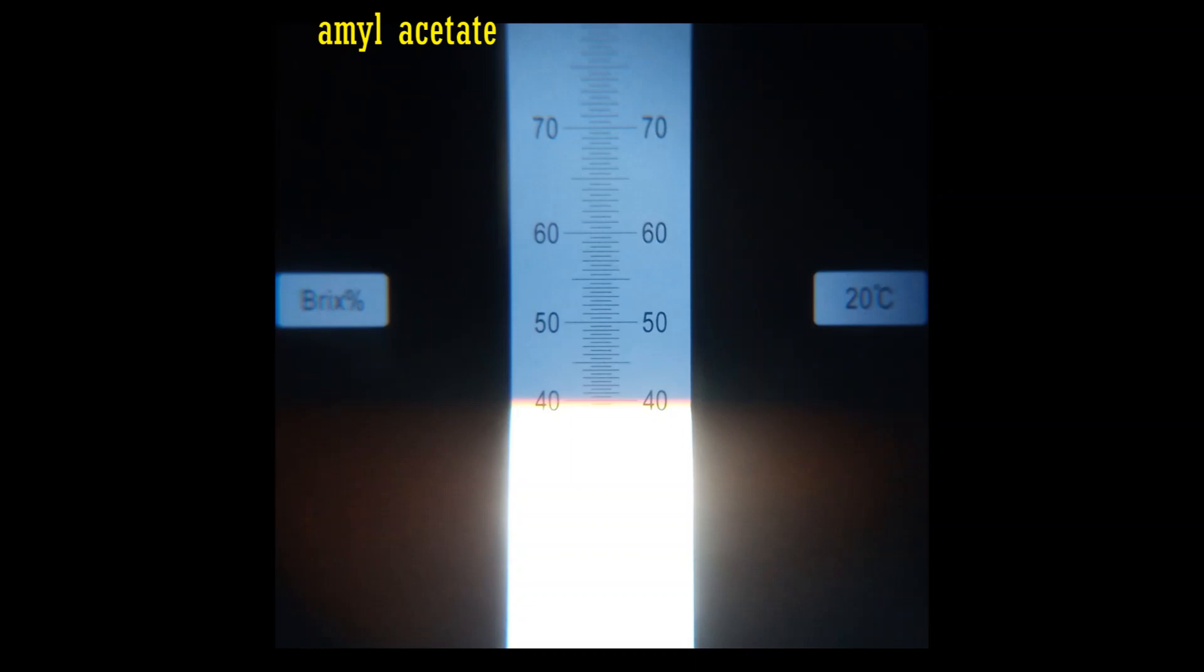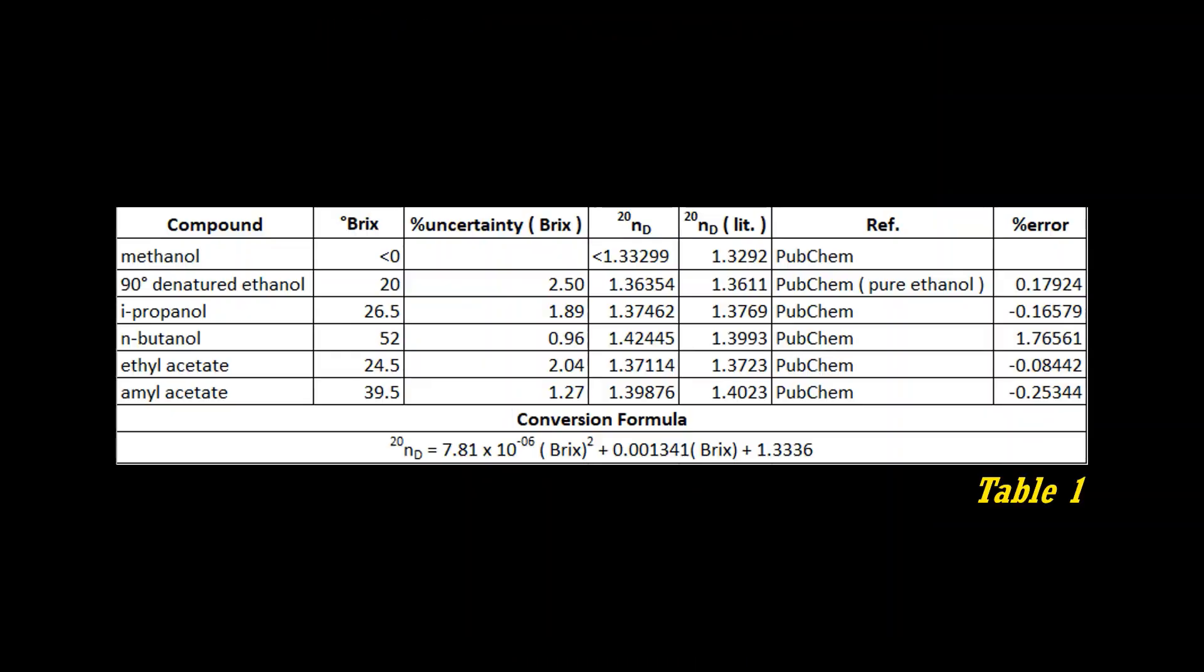Final results are summarized in Table 1. The resolution of our refractometer is 0.5 BRIX. From that, uncertainty percentage of each measurement is calculated. BRIX grades are converted into sodium D-line refractive index using formula displayed and compared with reference.